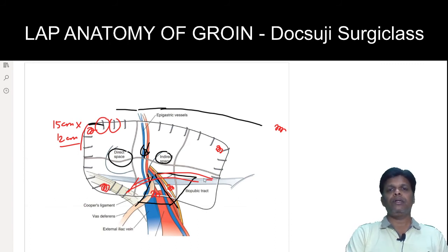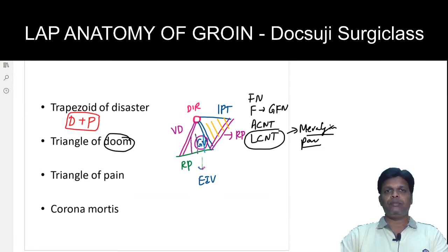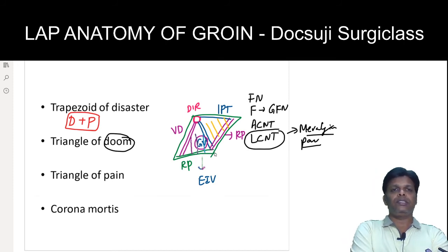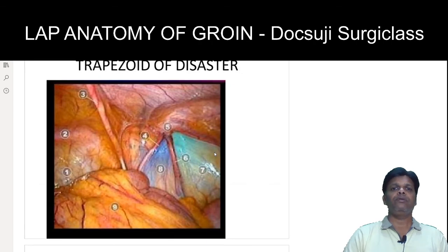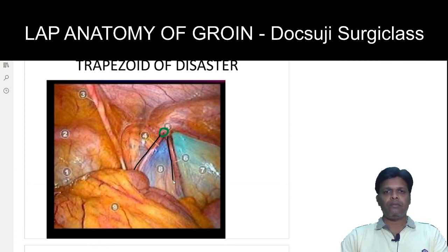When you look at the triangle of doom and the triangle of pain together, the combined region forms a trapezoid shape — this is called the trapezoid of disaster. In this intraoperative laparoscopic picture you can see the deep inguinal ring, the vas deferens, the gonadal vessels, and the iliopubic tract, all forming this trapezoid of disaster.